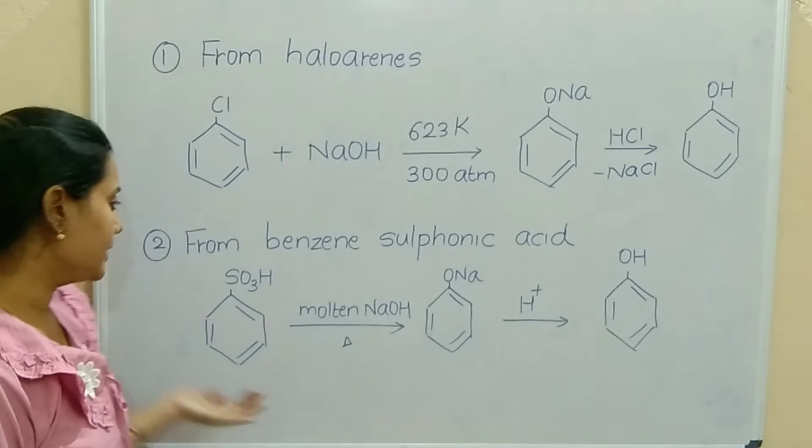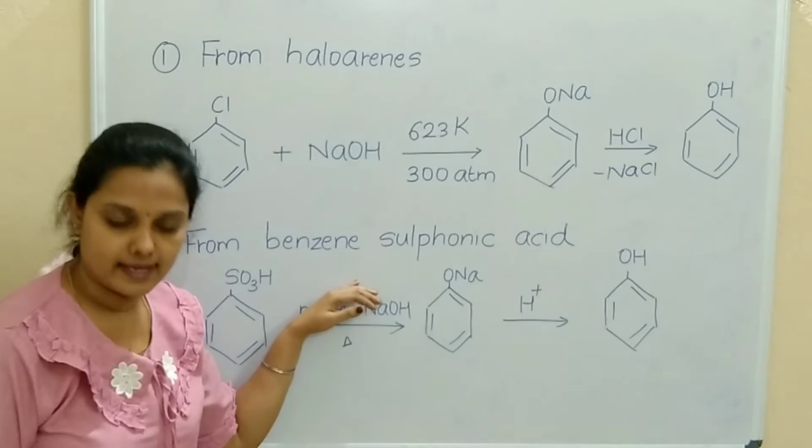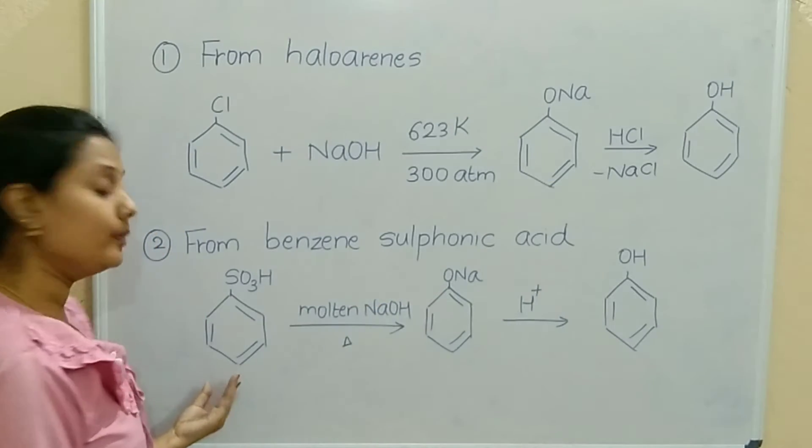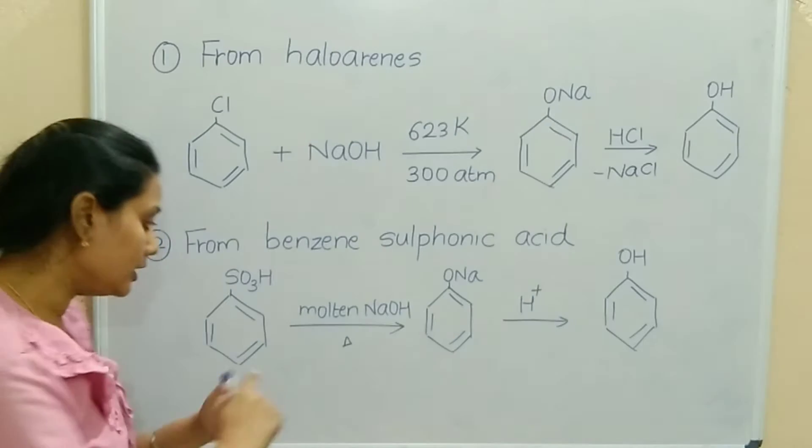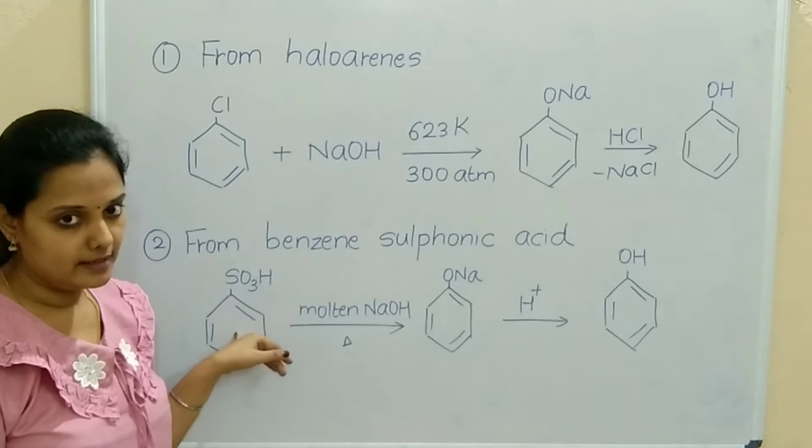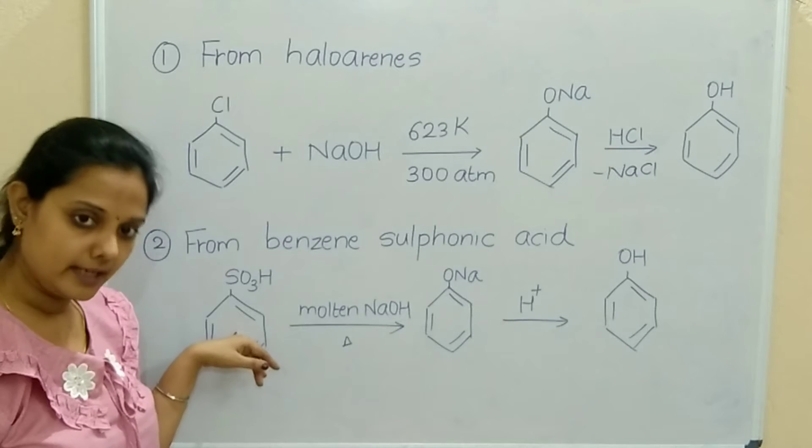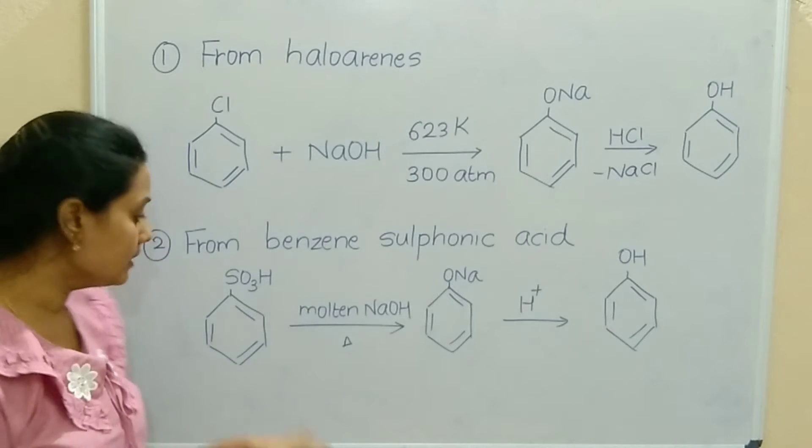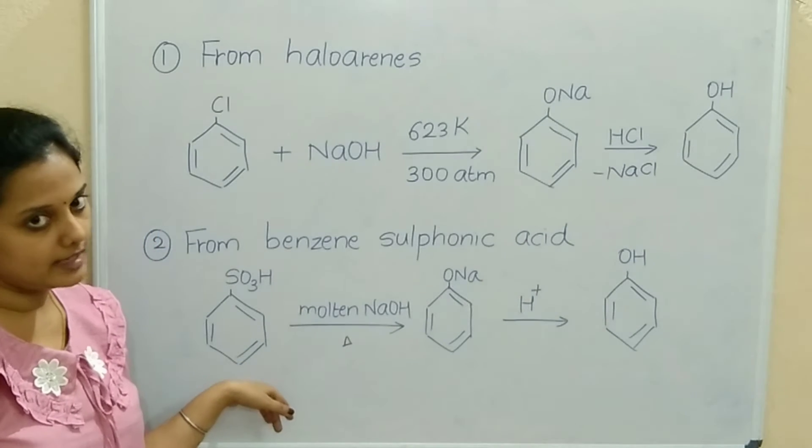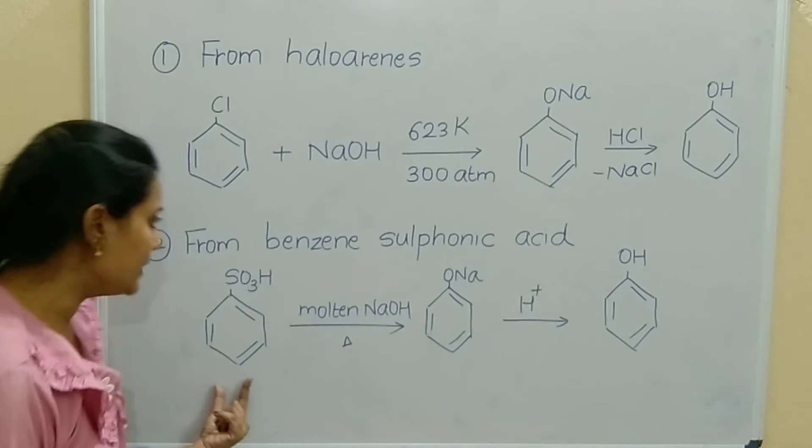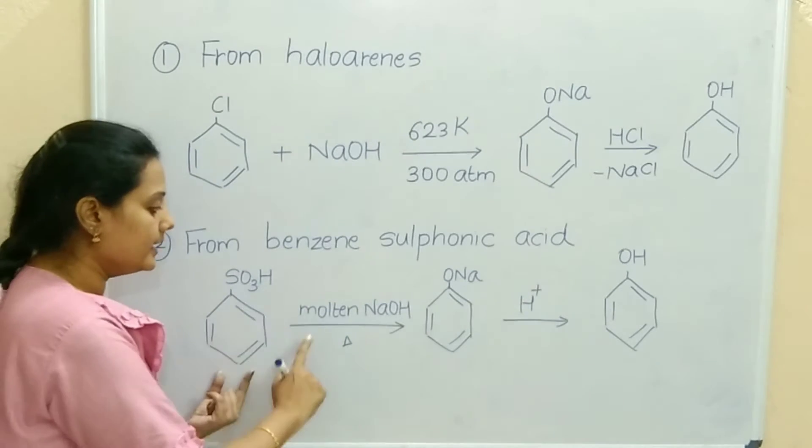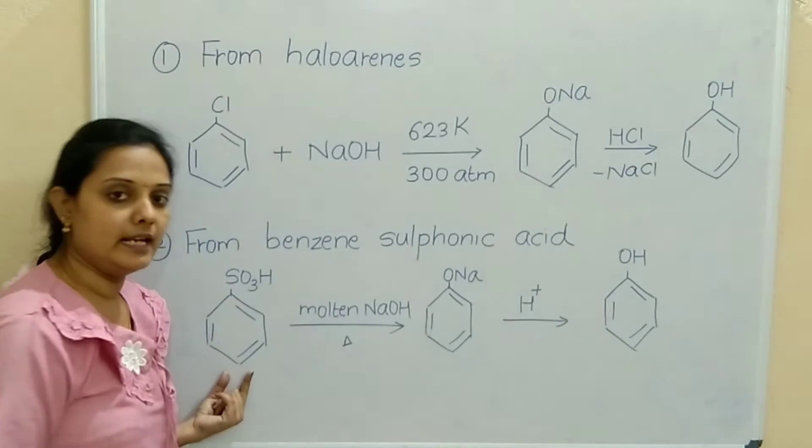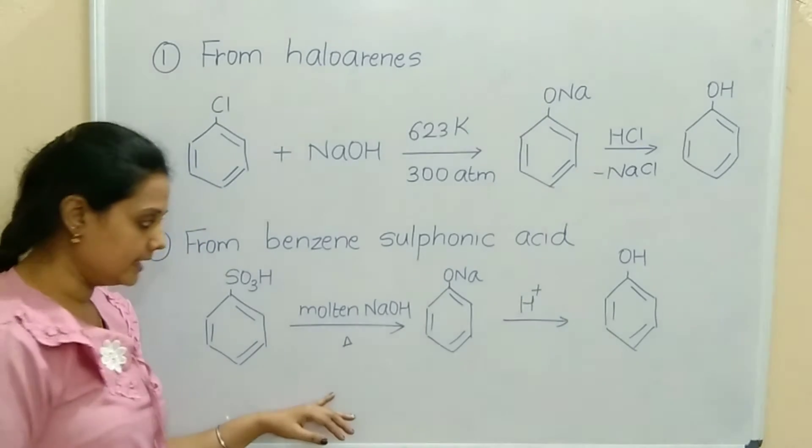The second reaction is from benzene sulfonic acid. Hope you know the preparation of benzene to sulfonic acid, that is sulfonation. Benzene on sulfonation will give benzene sulfonic acid. This benzene sulfonic acid SO3H is treated with molten NaOH. Heating is done.